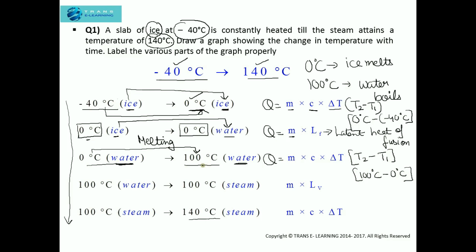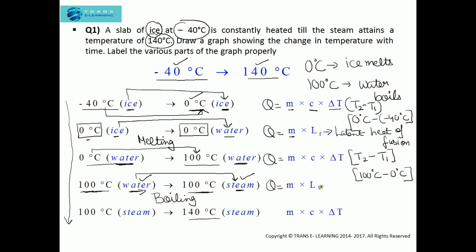Now we have water at 100 degree Celsius. On further heating, the water at 100 degree Celsius will start converting into steam at 100 degree Celsius. The water is changing into a gaseous phase while the temperature remains constant. This process of changing a liquid into a gaseous phase on heating is known as boiling or vaporization. Since there is only a change in state and no rise in temperature, the heat absorbed is M into LV, where LV represents the latent heat of vaporization.